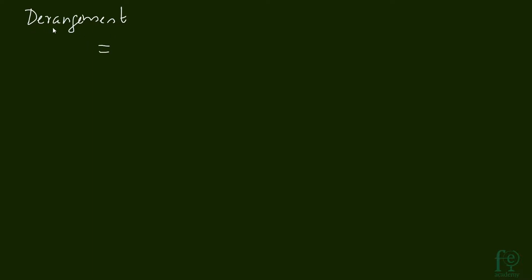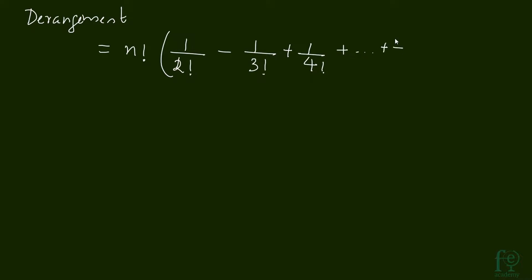Derangement means everything goes to the wrong place. So all 5 letters should go to wrong envelopes. The derangement formula is: D(n) = n! × (1/2! − 1/3! + 1/4! − ... + (−1)^n / n!). For odd-numbered terms it comes minus. So: 1/2! − 1/3! + 1/4! − 1/5! + 1/6! continuing up to 1/n!.